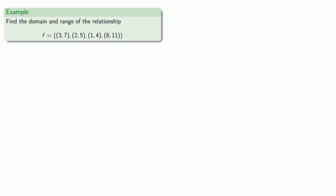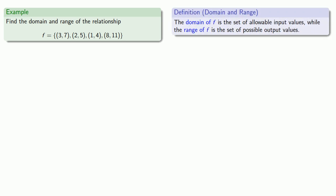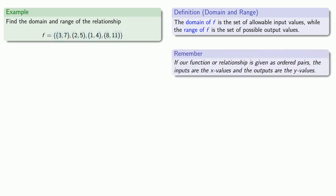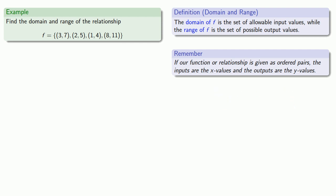For example, let's find the domain and range of the relationship. Definitions are the whole of mathematics — all else is commentary — so we'll pull in our definition of domain and range. Since we're given this relationship as a set of ordered pairs, the inputs are the x values and the outputs are the y values. So the domain is the set of input values, which are the x values — the first coordinates. Our domain is the set {3, 2, 1, 8}.